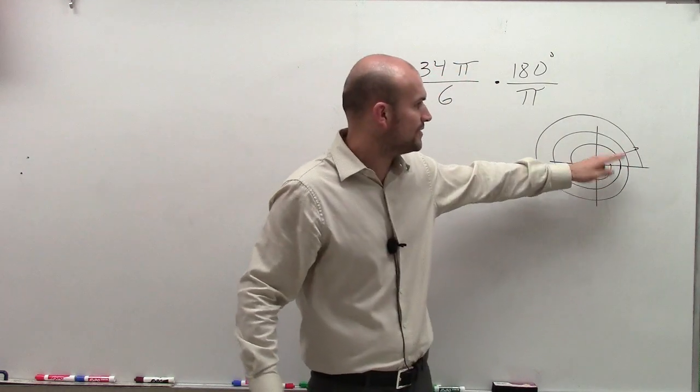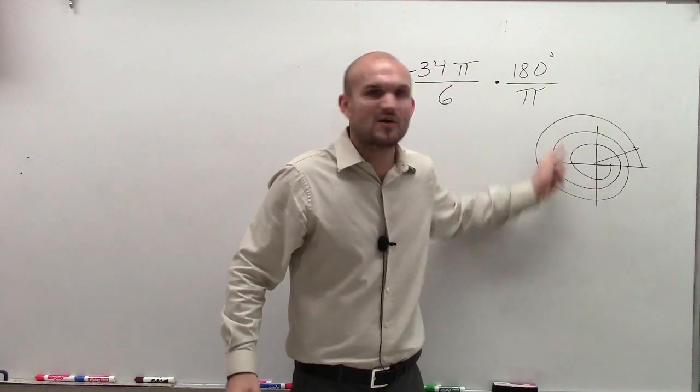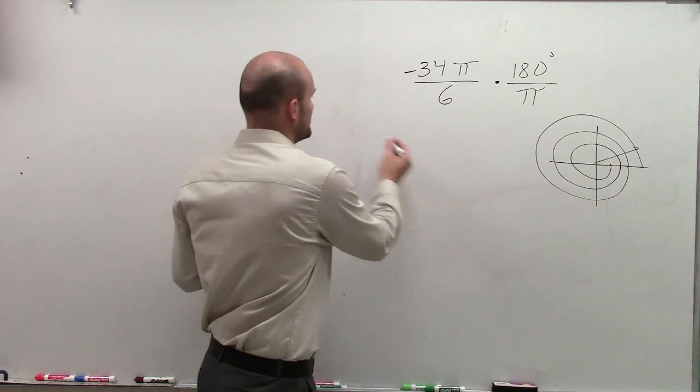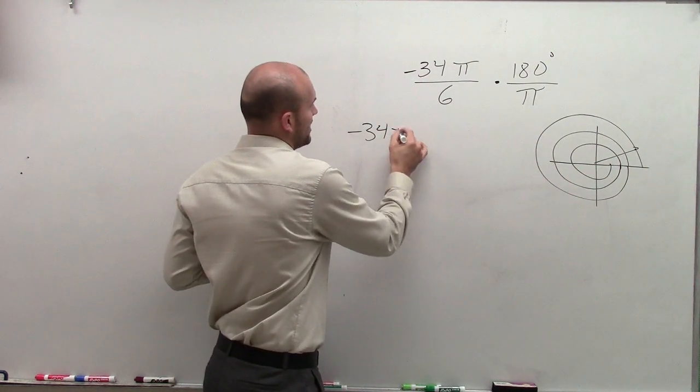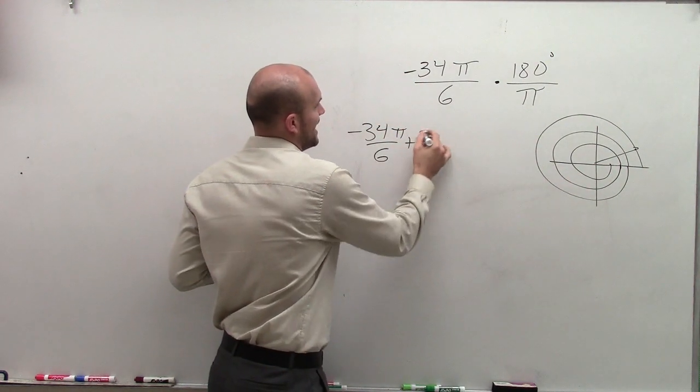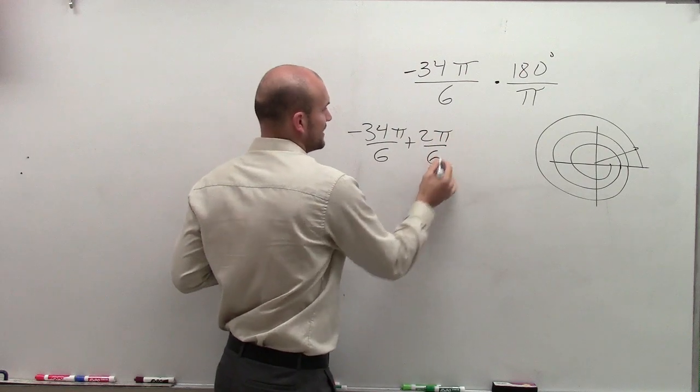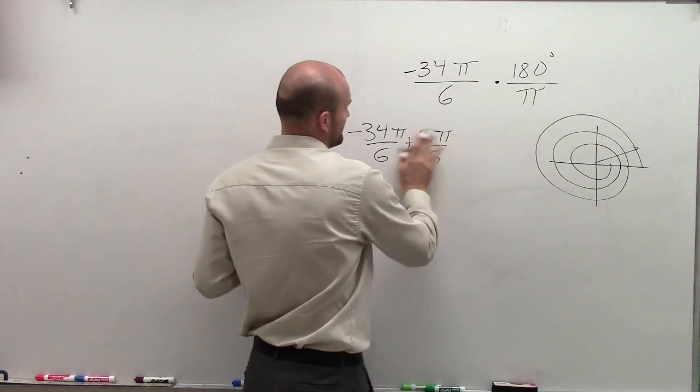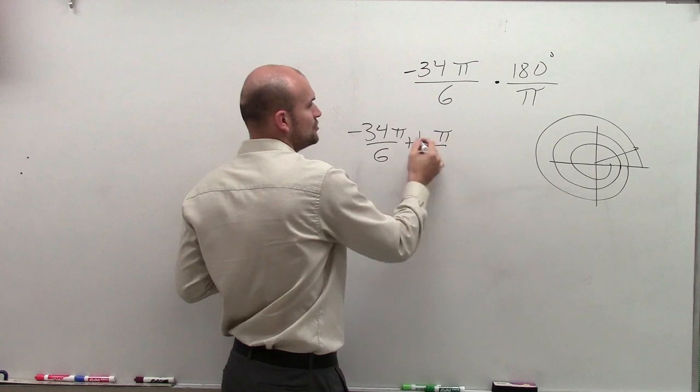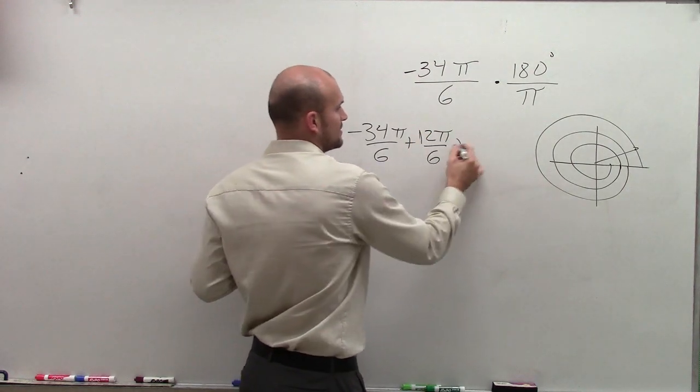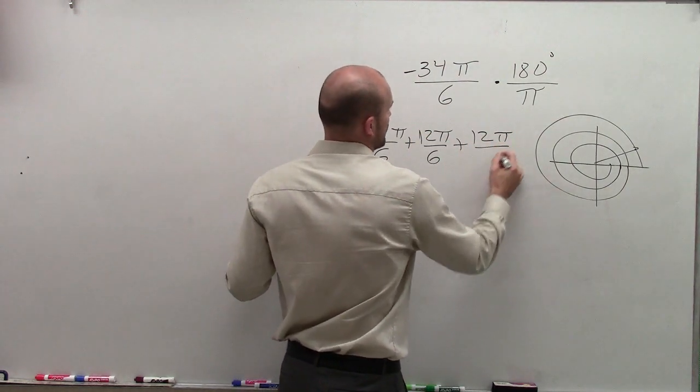So what I can do is I can get rid of all these revolutions. So what I'm going to do is I'm going to take negative 34π over 6, and I'm going to add 12π over 6 plus 12π over 6.